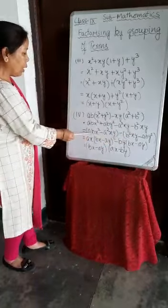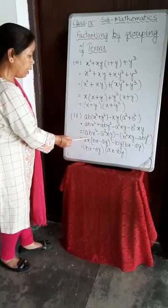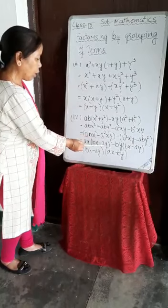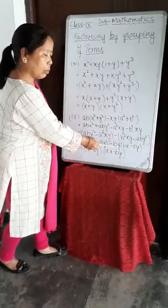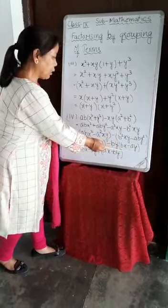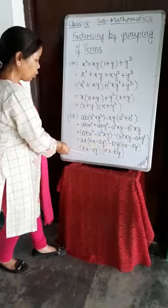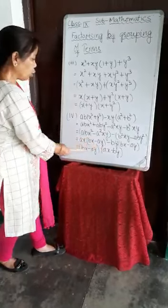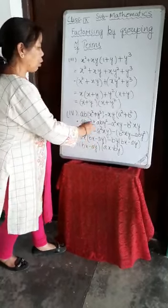In the first group, AX is common: taking out AX gives A(BX minus AY). In the second group, BY is common: taking out BY gives BY(BX minus AY). Now BX minus AY is common in both groups, so we take it out, and AX minus BY remains. Therefore the factors of AB(X squared plus Y squared) minus XY(A squared plus B squared) are (BX minus AY)(AX minus BY).